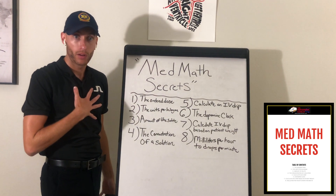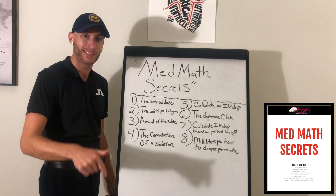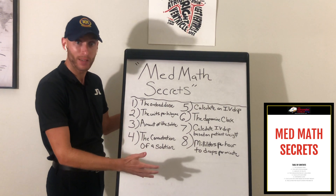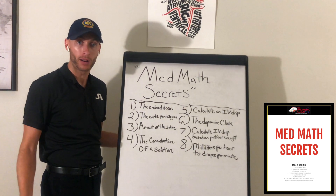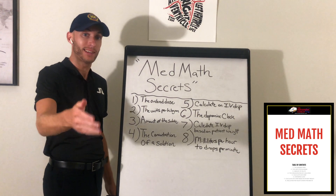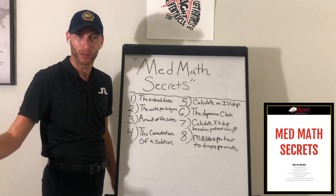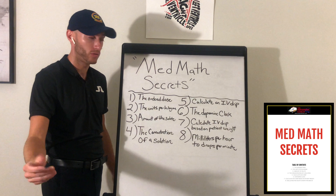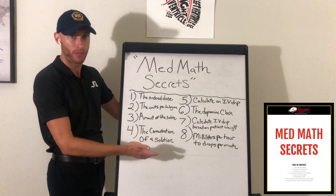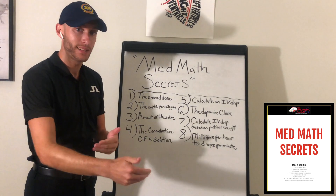I've worked my butt off to make it easy for you. All you've got to do is click the link down below and get access to MedMath Secrets. This sells for $7 — $7. Tell me the last thing you bought for $7. The textbooks in your program cost hundreds of dollars. Your program costs thousands of dollars. My friend, I can get you to understand MedMath at a simple level, get your confidence back, and maybe even get you through a test for $7.